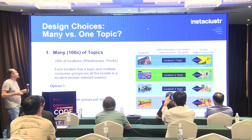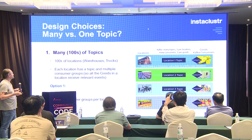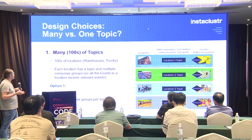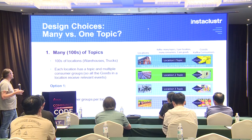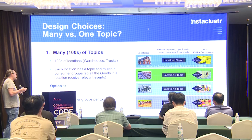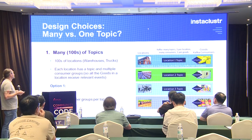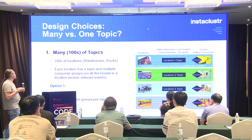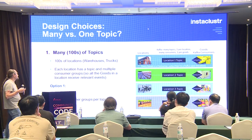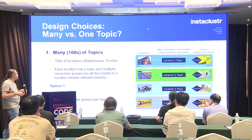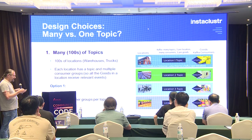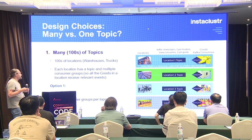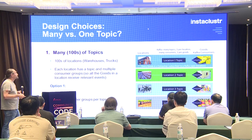I had two design choices when I built this application. The first was having many or hundreds of topics — essentially one topic for each location, every warehouse and every market in the system. Each location was a topic, and consumer groups were subscribed to those topics so that each of the goods in a particular location could receive the relevant events. Many topics and many consumer groups per topic resulted in a very high fan-out.